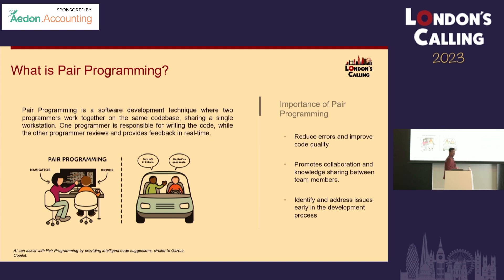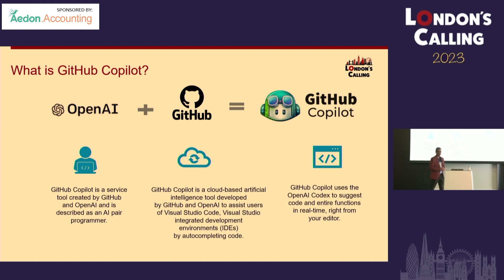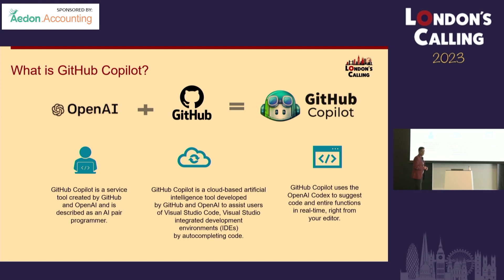Now that we understand pair programming, the next thing is: what is GitHub Copilot? I mentioned pair programming because GitHub Copilot is known as an AI pair programmer. Does anybody like science fiction movies? GitHub Copilot is just like a sci-fi movie. It's an AI pair programmer and it uses OpenAI Codex — well known to everybody who uses ChatGPT.